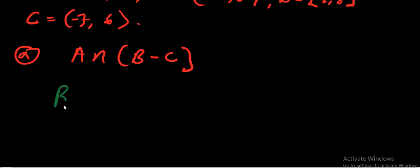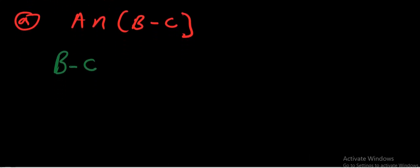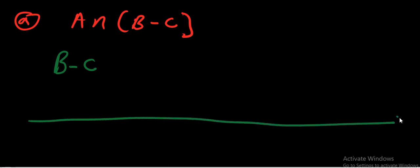We cannot go directly and solve the whole expression without first solving B minus C. Since we have been given our sets in interval notation, we are going to use the number line. Draw a number line and put a zero there to demarcate negatives from positives.